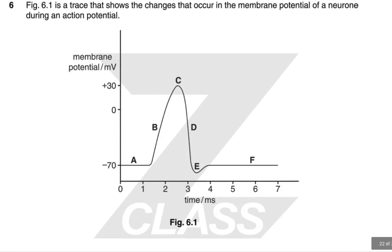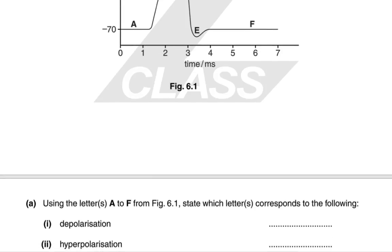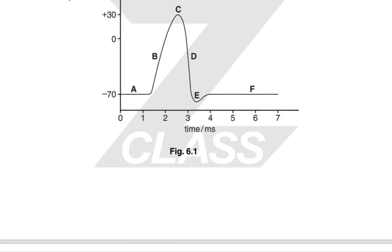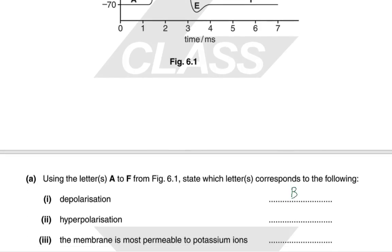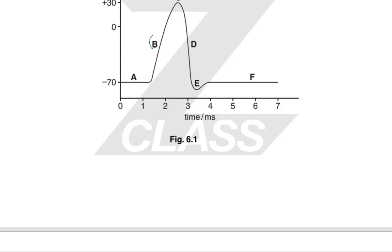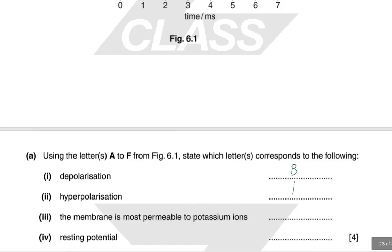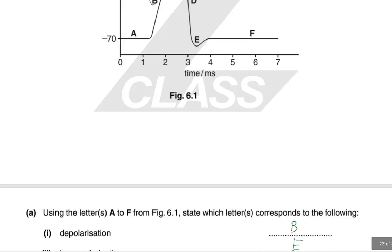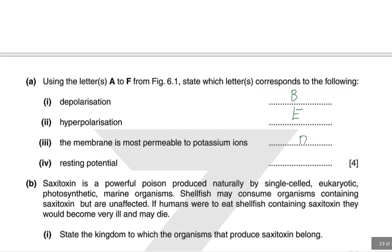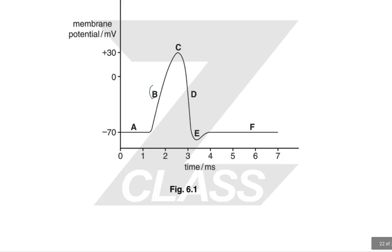Figure 6.1 shows changes in membrane potential during an action potential. Depolarization corresponds to point B; hyperpolarization — when the voltage goes below the resting potential — is point E; the membrane is most permeable to potassium ions at point D; and the resting potential of around minus 70 millivolts corresponds to both A and F.